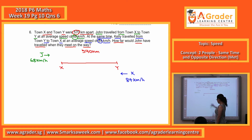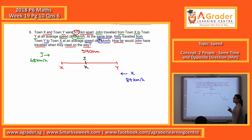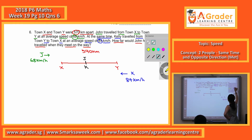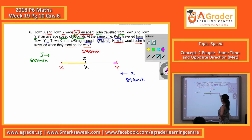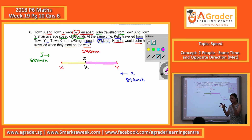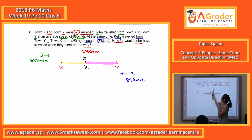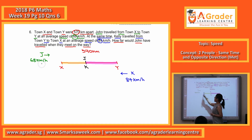So John here, Kelly here. This is the point where they meet. You can see that John will travel this part, while Kelly will travel this part. They will travel the whole way together. Since they start at the same time, the total distance they travel together is 570 km.